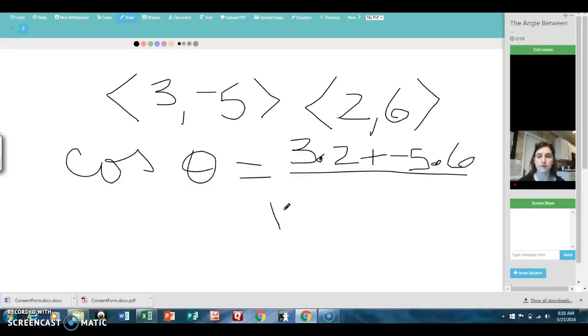So the magnitude of the first one is the square root of 3 squared plus 5 squared, and the second one is 2 squared plus 6 squared.